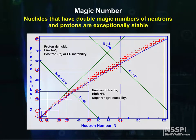Nuclides that have double magic numbers of neutrons and protons are exceptionally stable. Helium-4 having two neutrons and two protons is in a class all by itself. It is so stable that it can be ejected from a large nucleus as a form of decay. We call this alpha decay.